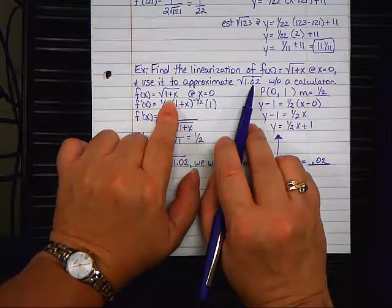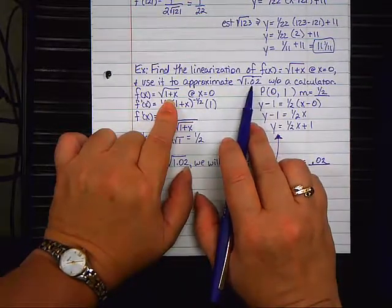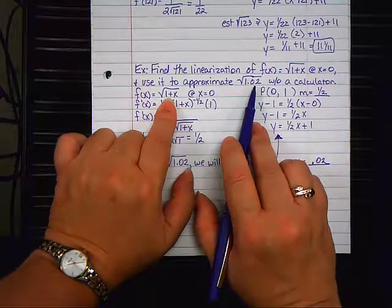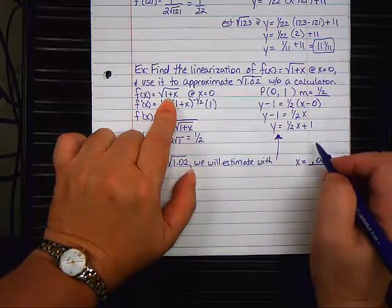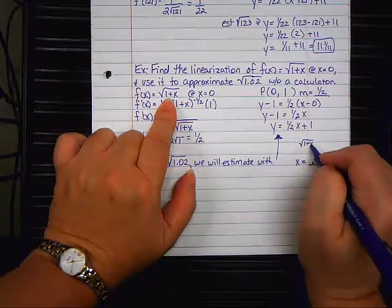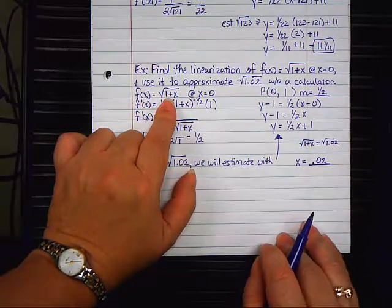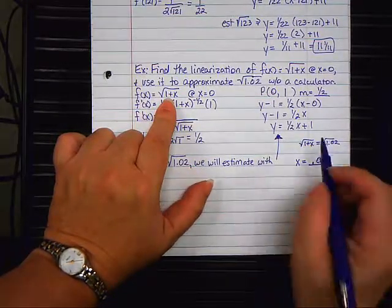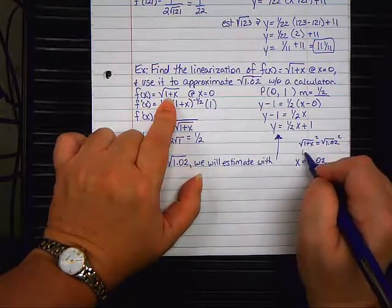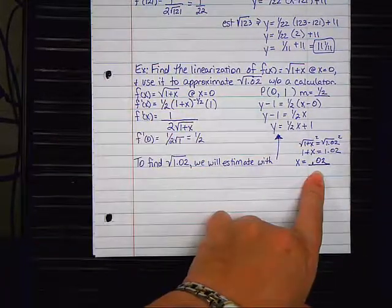You look at the equation that you're given. You're looking at what you are asked to find. This radical is supposed to equal this radical. So, what you can do is you can actually just do the math. You can say that the square root of 1 plus X is supposed to equal the square root of 1.02. And you can solve it. And that will tell you what X is. So, how do I take those square roots off? I square both sides. So, I get 1 plus X equals 1.02. And there you go.